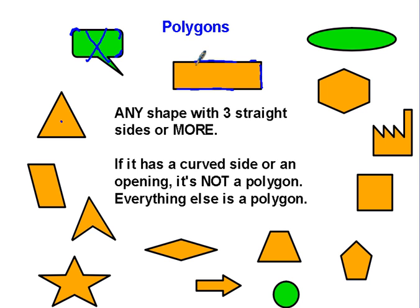This has straight sides, polygon. This has curves on it, that's not a polygon. Straight sides, that's a polygon.